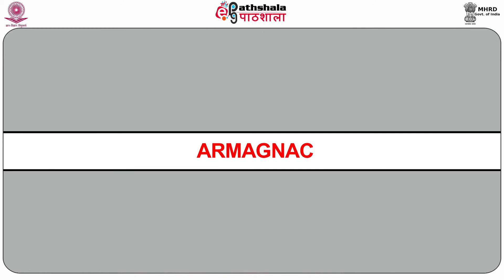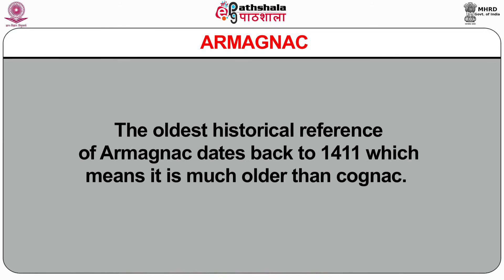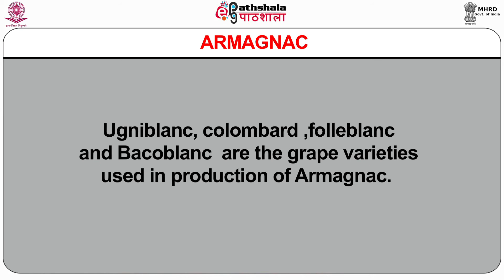Now we will discuss the other equally important brandy, which is Armagnac. It also comes from France. Armagnac is one of the finest brandies produced in the world, rated as second best to Cognac. Produced in the Armagnac region from the Gers department, it has the privilege of being called the oldest brandy produced in France. The oldest historical reference of Armagnac dates back to 1411, making it much older than Cognac. The grape varieties used in production of Armagnac are Ugni Blanc, Colombard, Folle Blanche, and Baco Blanc.